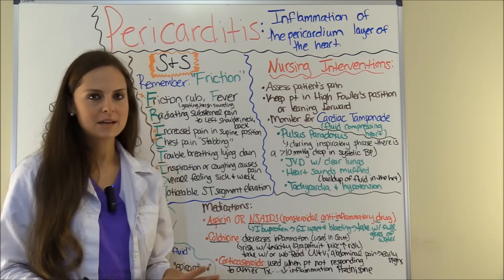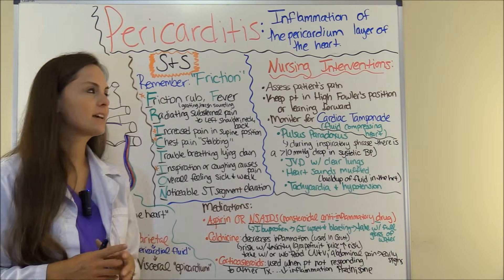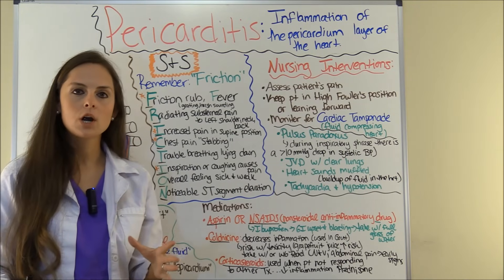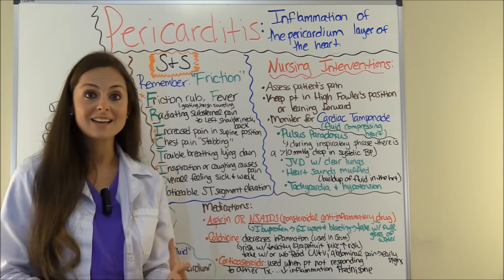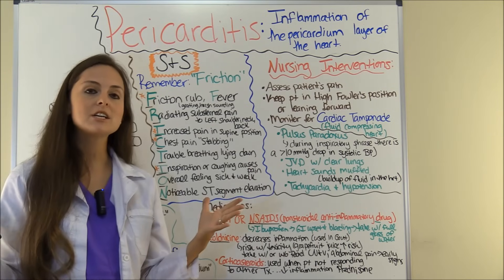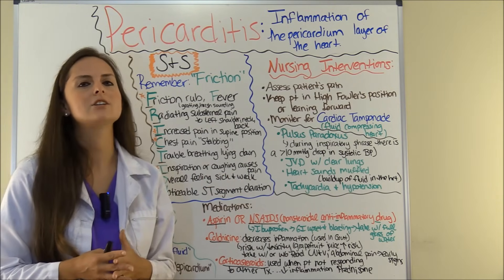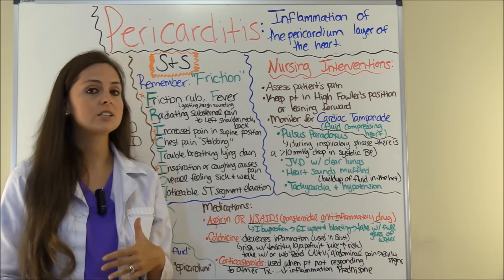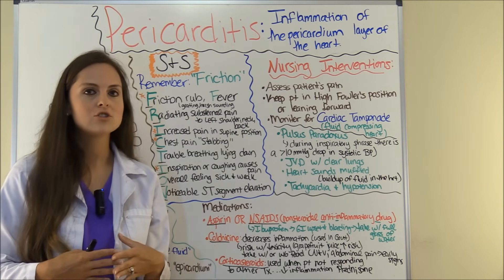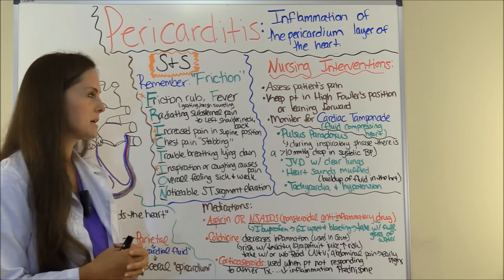What are the typical signs and symptoms you're going to see in a patient with pericarditis? To help you remember, use the word FRICTION — because the problem with pericarditis is that inflammation is causing those layers to rub up against each other, which is why the patient has a lot of pain, especially chest pain. Remember the word FRICTION to help you recall all those signs and symptoms.